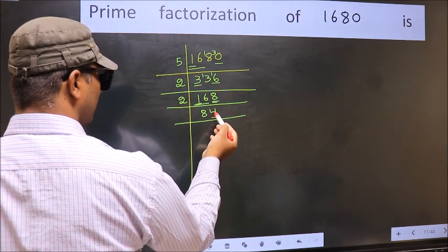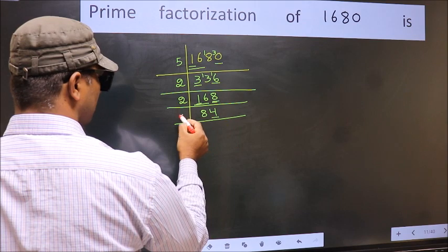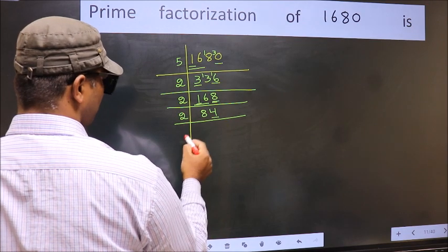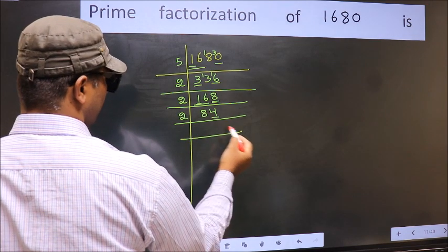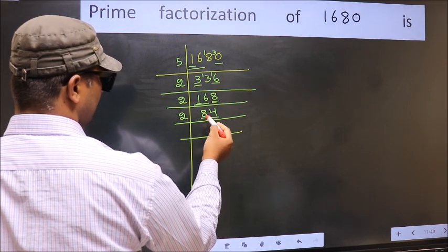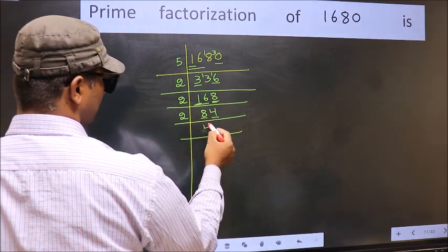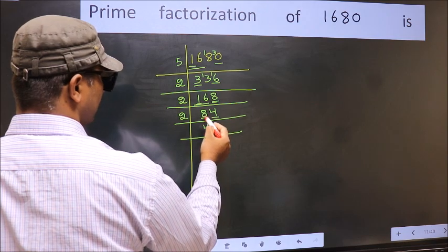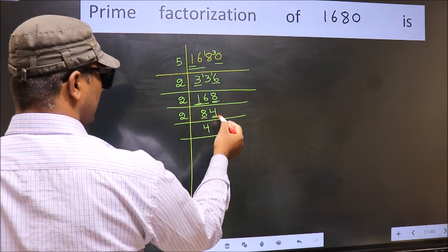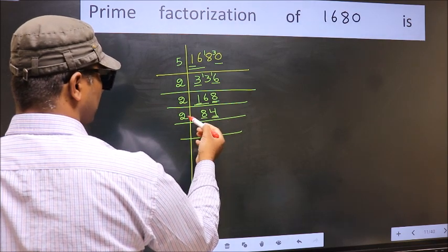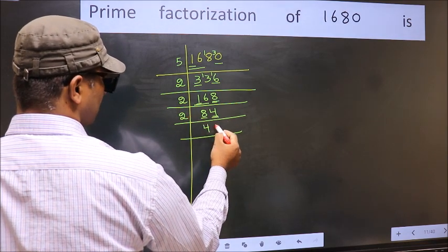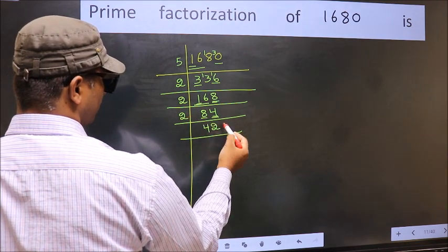Now the last digit is 4, even, so take 2. First number 8. When do we get 8 in the 2 table? 2×4=8. The other number is 4. When do we get 4 in the 2 table? 2×2=4.